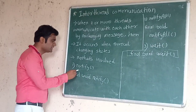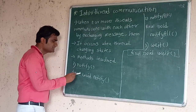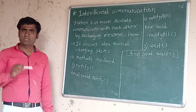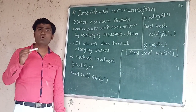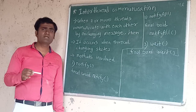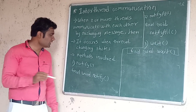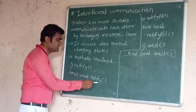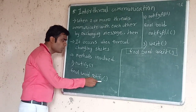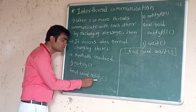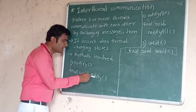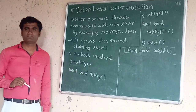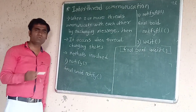The first method is notify. Its syntax is written as final void notify(). It is final because this method is inherited from the Object class, which is the superclass of all classes. When notify() is called, it informs the first blocked thread to switch back to the runnable state and subsequently the running state — this is where inter-thread communication occurs.